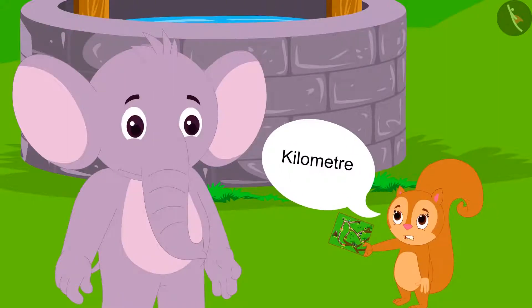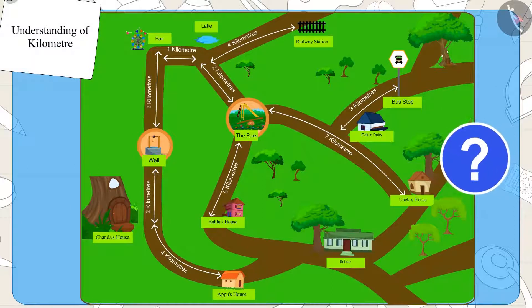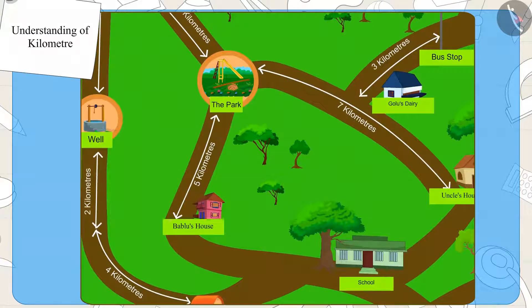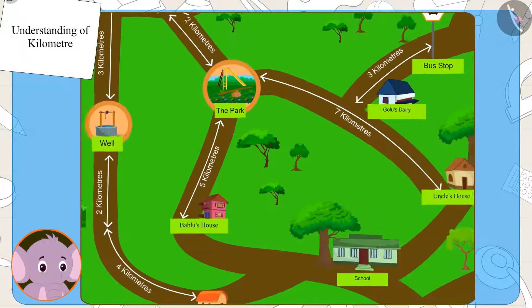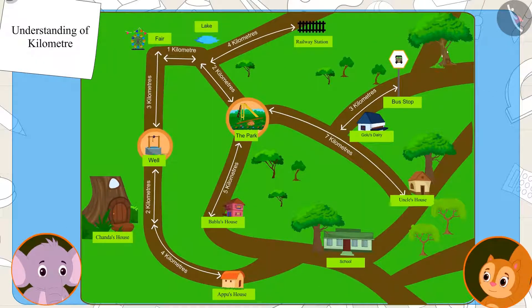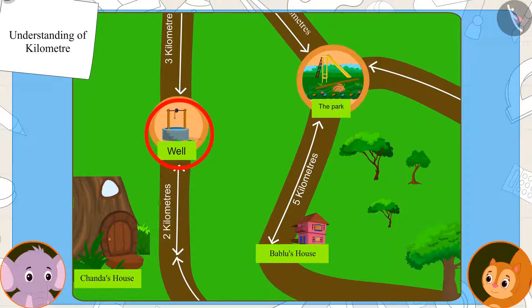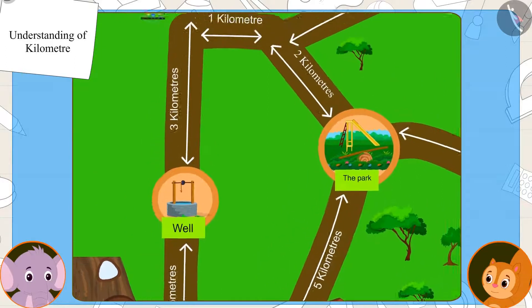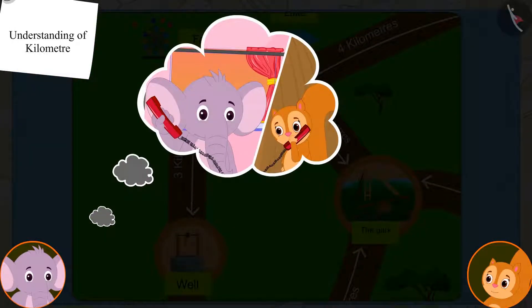Children, have you seen a map before? Maps often include places and distances between them. Come, let's see what else Appu is telling Chanda about this map. Look at this Chanda, we will start from the well and first we will go to the fair as I told you on the phone yesterday.